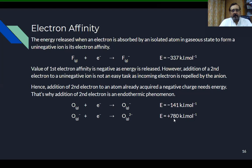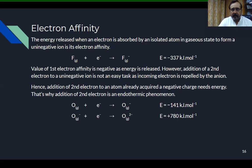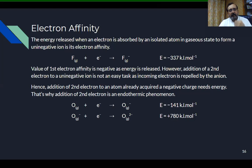Remember: the sign of the first electron affinity is always negative, while the second and subsequent electron affinities are positive. The value of the third electron affinity is even more positive than the second.